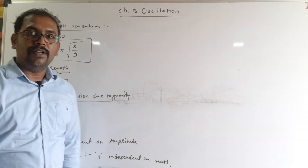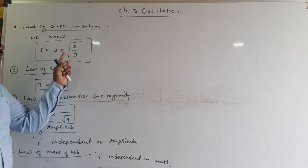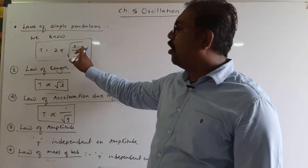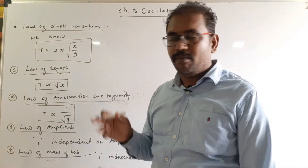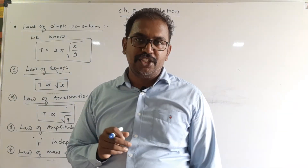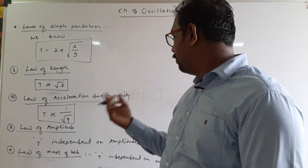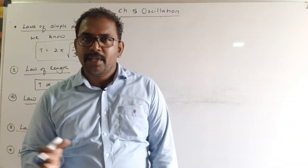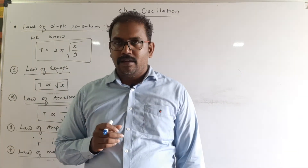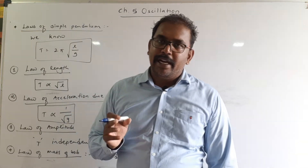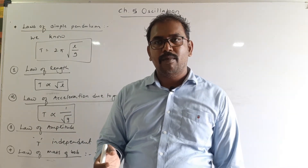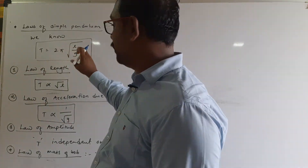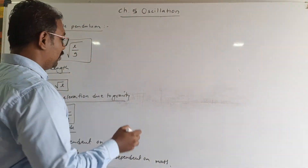The period of a simple pendulum does not depend on the mass. You can see in the formula that the mass of the bob is not mentioned. It means that if a 100 gram bob gives a period of one second, a 200 gram bob will also give the same period, as long as the length is the same.